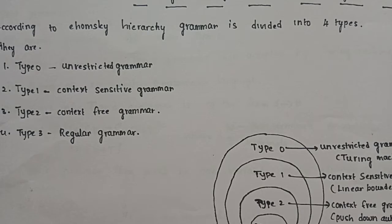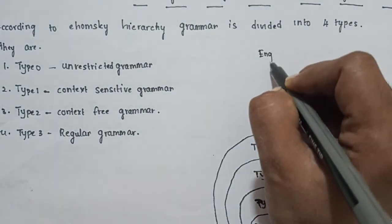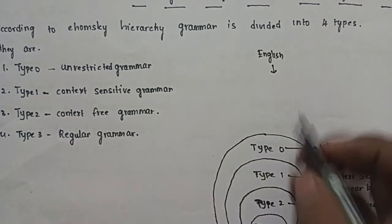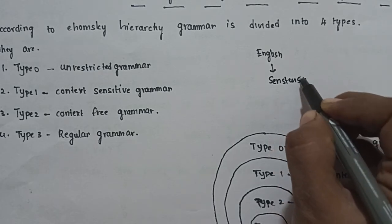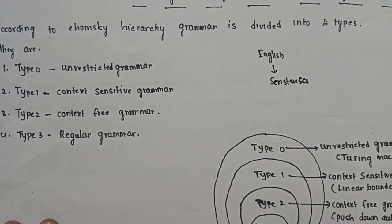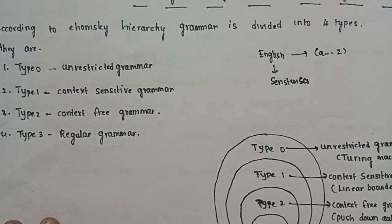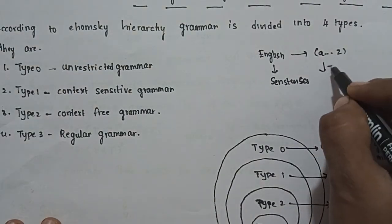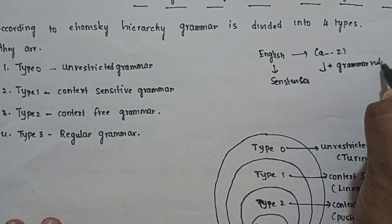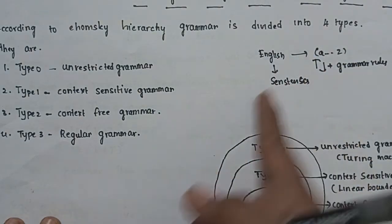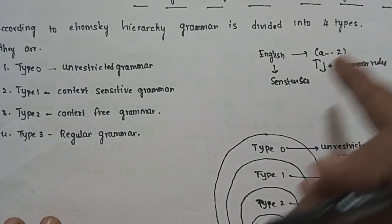For a simple example from normal daily life: in conversation you use a language, such as the English language. To use sentences in English, there are different requirements: some alphabets, and some grammar rules in English language. Using alphabets and grammar rules, you can form sentences in your language.